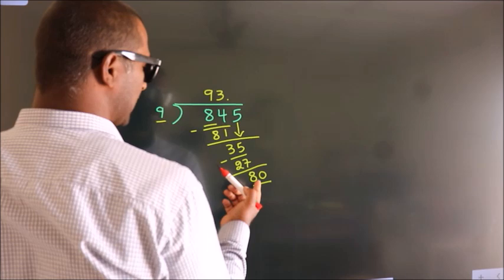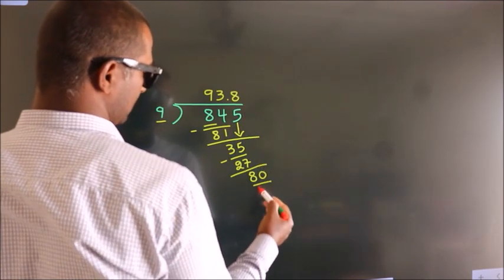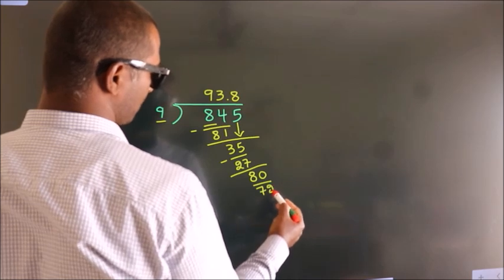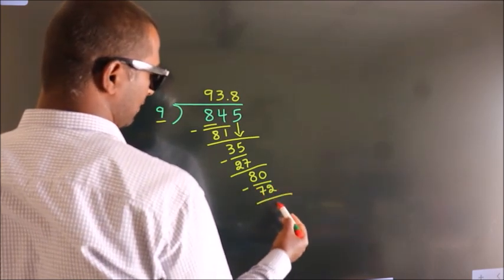A number close to 80 in the 9 table is 9 times 8 equals 72. Now we subtract and we get 8.